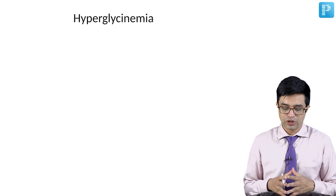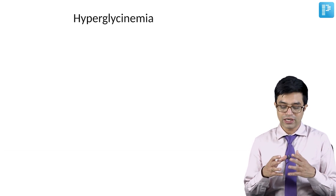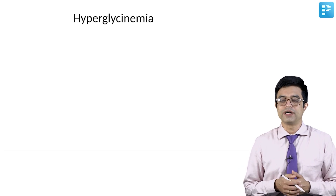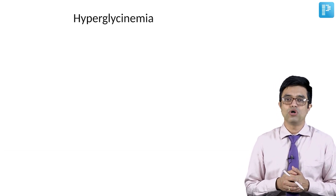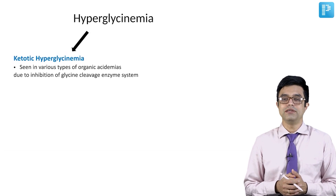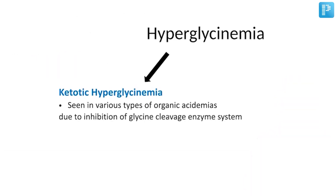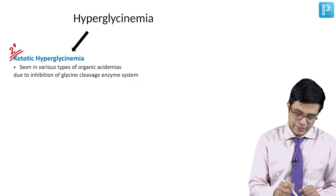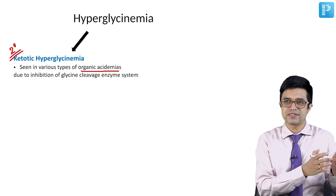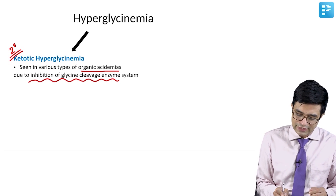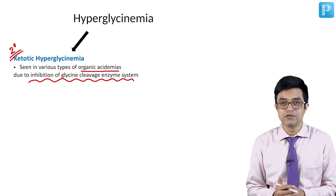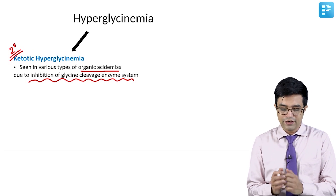The major inborn error of metabolism related to glycine is called hyperglycinemia, where circulating levels of glycine are inappropriately elevated. Hyperglycinemia can be of two types: ketotic hyperglycinemia and non-ketotic hyperglycinemia. Ketotic hyperglycinemia is also called secondary hyperglycinemia, seen as a consequence of various organic acidemias — such as methylmalonic acidemia and propionic acidemia — which as a bystander effect cause inhibition of the glycine cleavage enzyme system.